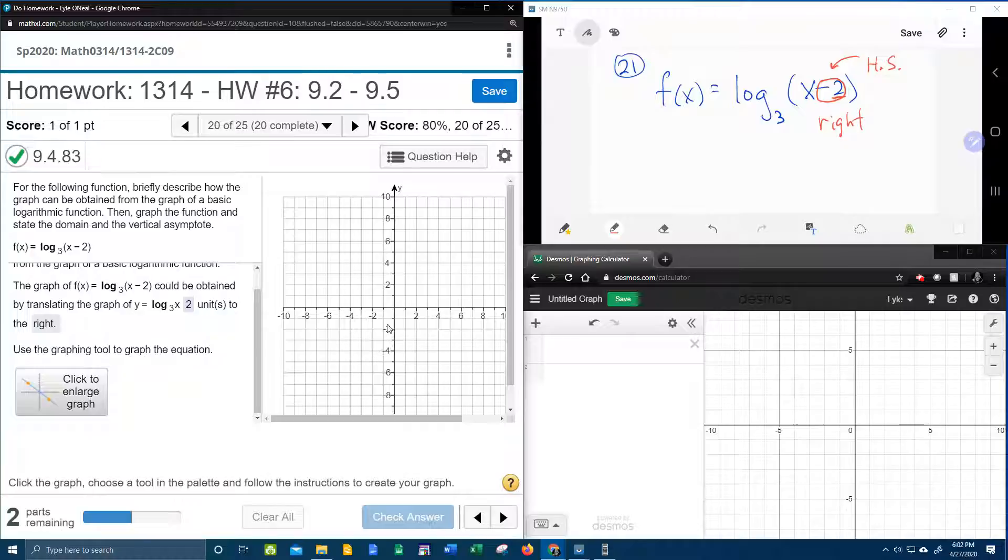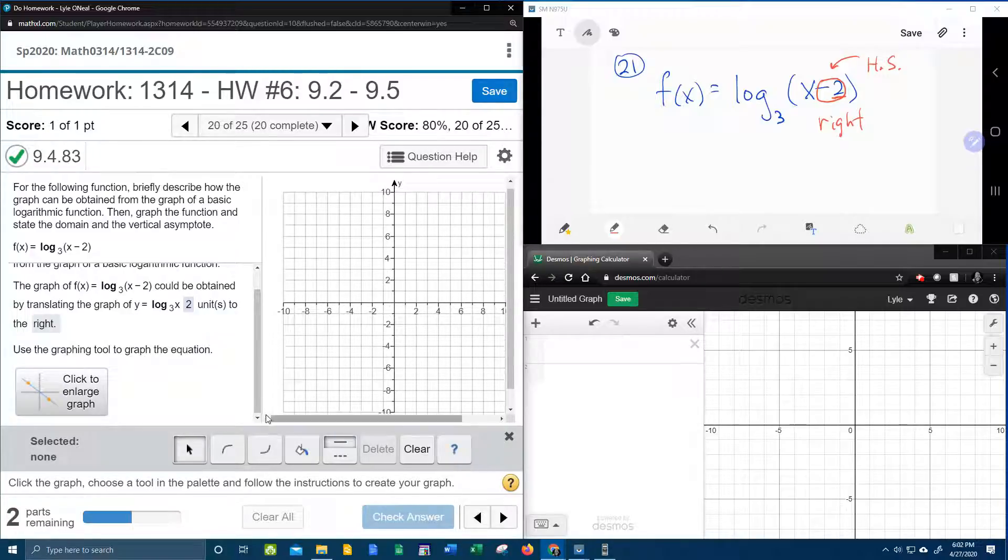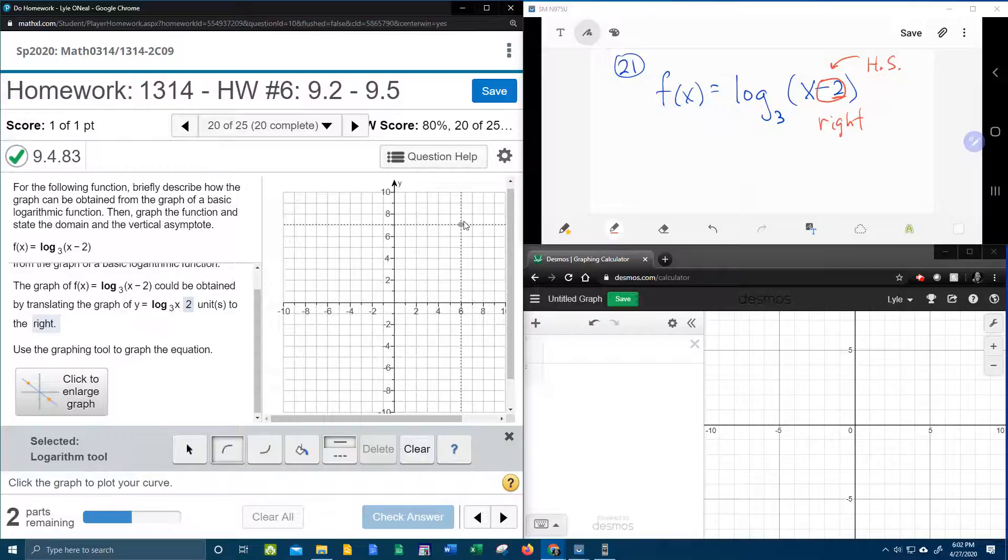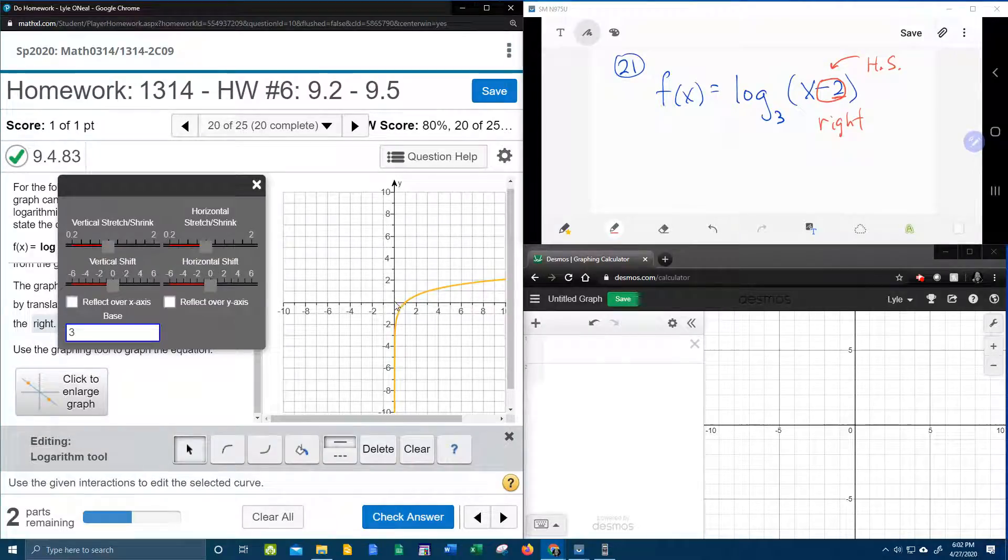And then it's going to want us to graph this function. So we're going to click on the graph, and we're going to choose the log tool since this is a log function. It doesn't matter where you click on the graph, it's going to center the graph kind of here at the origin, and it's going to want you to put in the transformations. So what do we say? We have a shift right 2, horizontal shift, and if it goes to the right, it's going to be positive. Do you see that on the graph, that if I move it to the right, it shifts it to the right here? 2 units, and we don't have any other transformations.